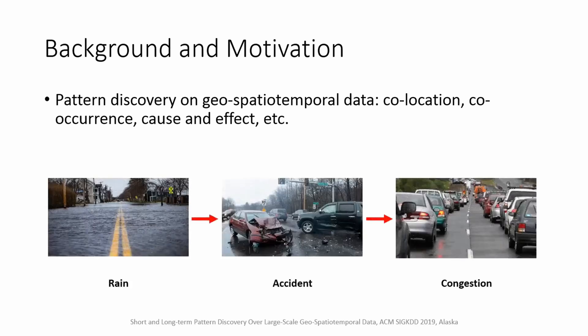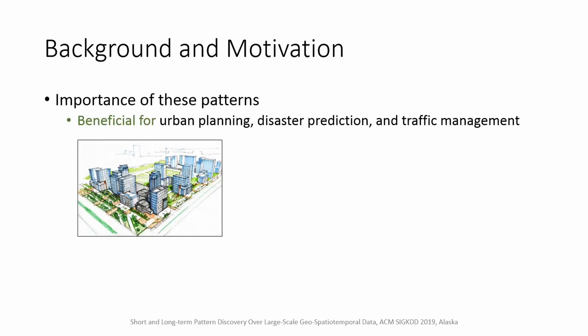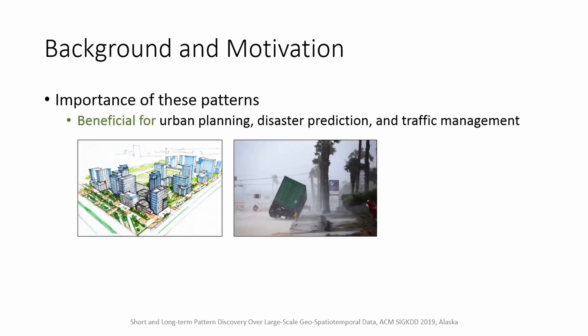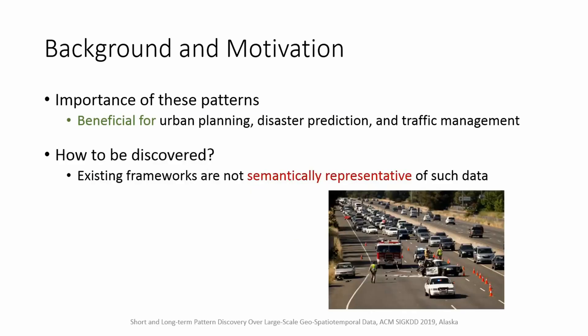One example is a rain event which causes a traffic accident, and the accident causes a traffic congestion. But why is extraction of these patterns important? Using them we can drive insights which are useful for many applications such as urban planning, disaster prediction, and traffic management. However, existing frameworks are not semantically representative of such data.